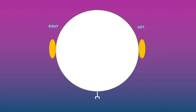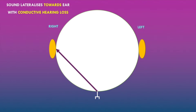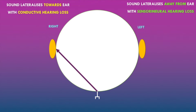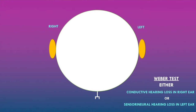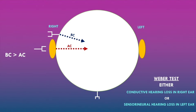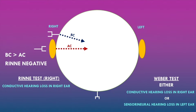Looking at the schematic diagram for example two: the Weber test showed lateralization to the right ear, indicating either conductive hearing loss in the right ear or sensorineural hearing loss in the left ear. The Rinne test in the right ear showed bone conduction greater than air conduction — a Rinne negative test — confirming conductive hearing loss in the right ear.